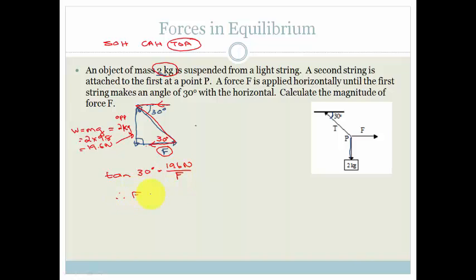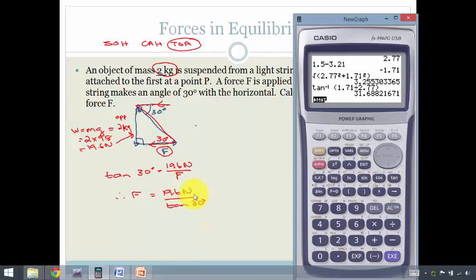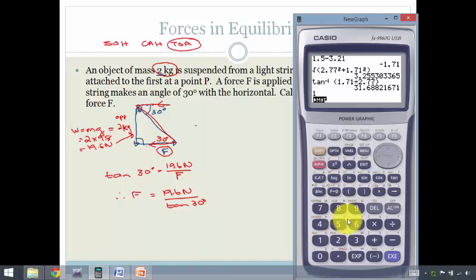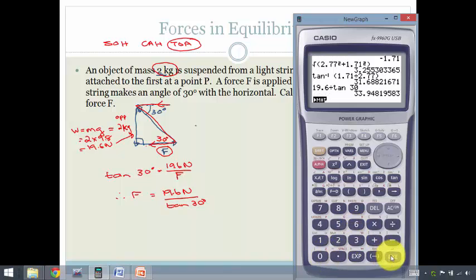Therefore F is 19.6 Newtons divided by tan 30 degrees. I just cross-multiplied. So we get out our calculator and we have 19.6 divided by tan of 30, and that gives us 33.948, which is the same as 33.95 if we round to two decimal places.